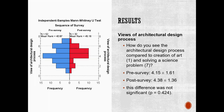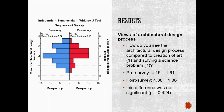In another similar question, students were asked how they see the architectural design process, compared to creation of art represented by one and solving a science problem represented by seven. The mean score in the pre-survey was 4.2 and in the post-survey was 4.4, meaning students' perceptions of the architectural design process were more closely aligned with solving a science problem in the post-survey. However, this difference was not significant either.